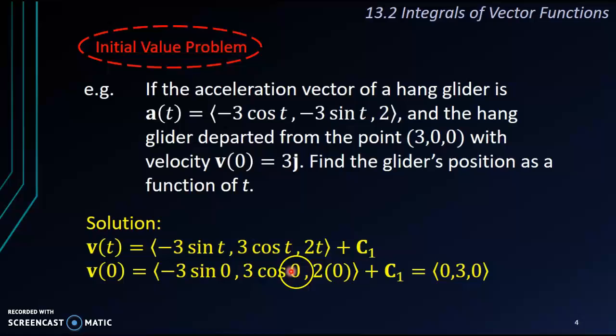Remember, here we get (0, 3, 0) from the substitution t equals to 0, and this (0, 3, 0) is from the question. So if we equalize this expression and this vector, we will get C₁ is a 0 vector.